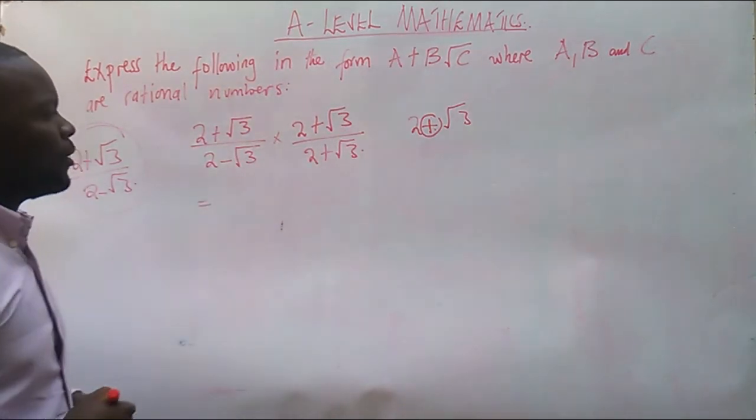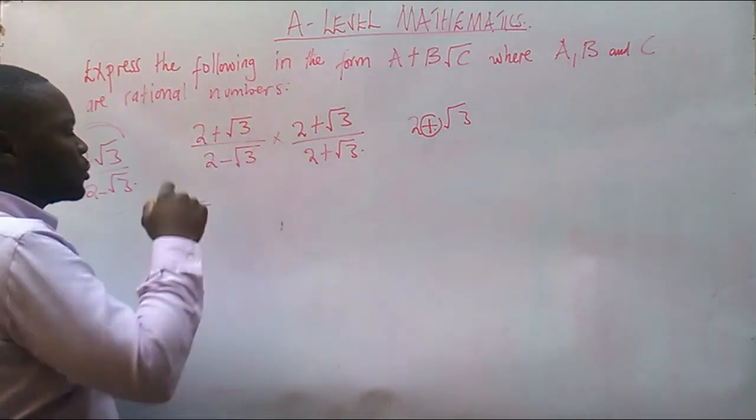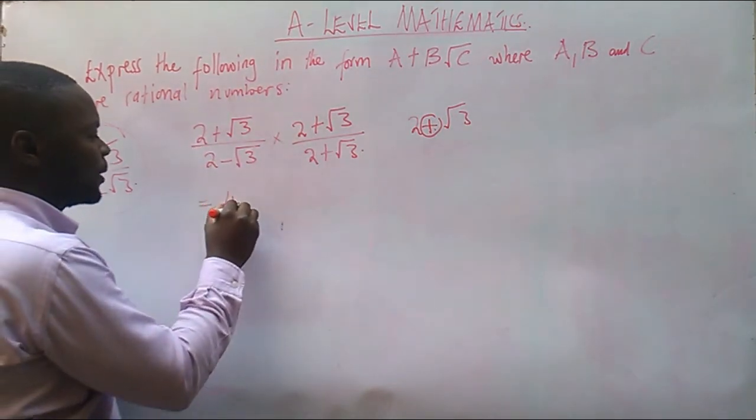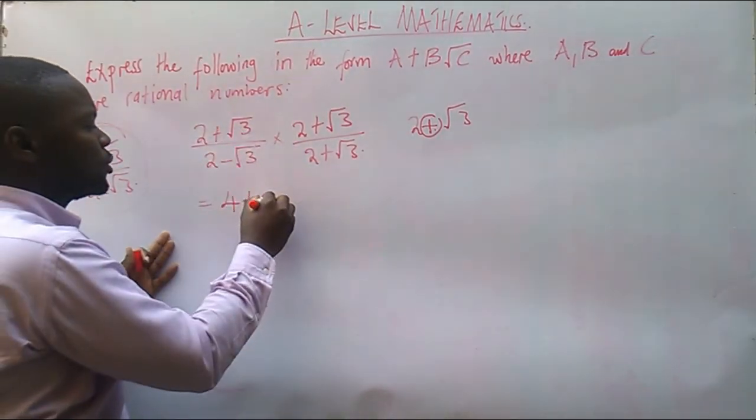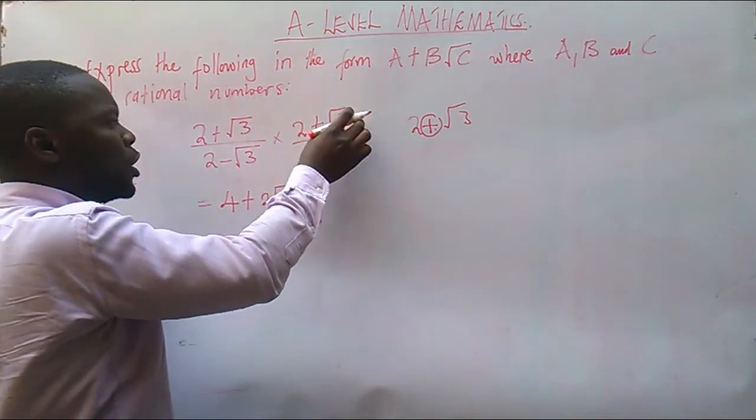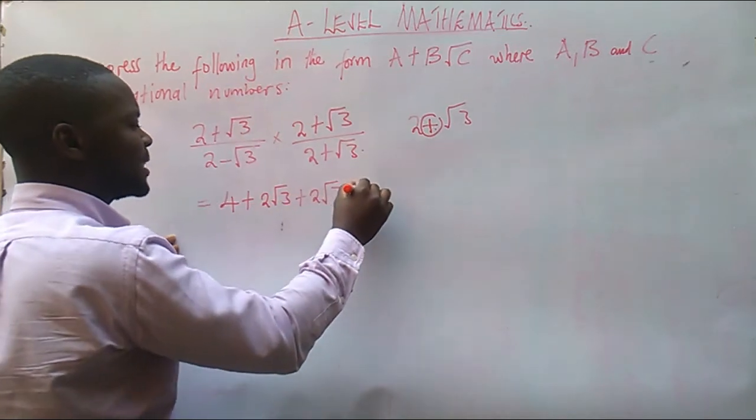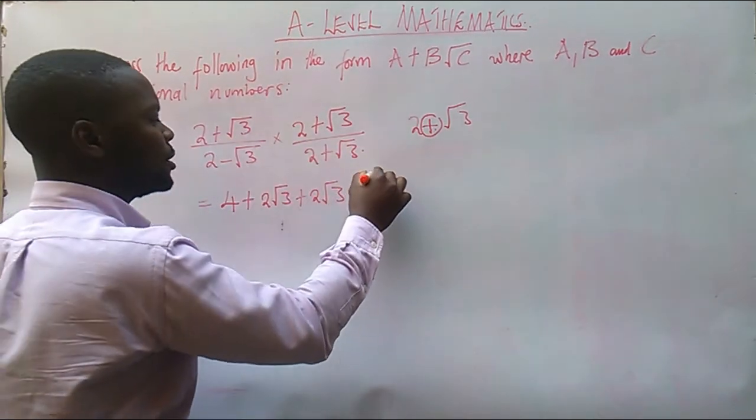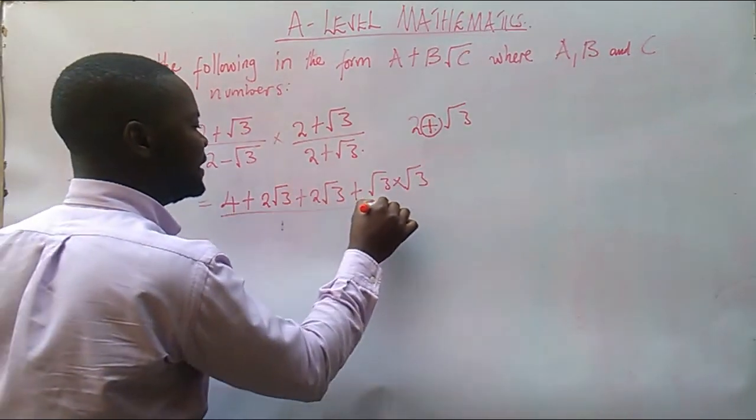To the numerator, let's expand. So 2 times 2 is 4, plus 2 times root 3 is 2 root 3. And then we come to this one, root 3 times 2 is positive 2 root 3. Then plus root 3 times root 3 is 3. Everything divided by, as I said,